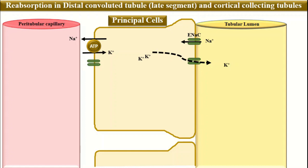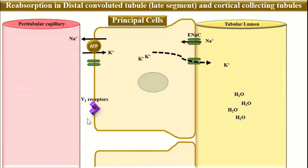This part is normally impermeable to water, so water remains inside the tubular lumen. However, when a person becomes dehydrated and the body needs to retain water, these segments can become permeable to water. On the principal cells, very important receptors called V2 receptors or vasopressin 2 receptors are located. These are receptors for vasopressin, also known as antidiuretic hormone, which is released from the posterior pituitary.